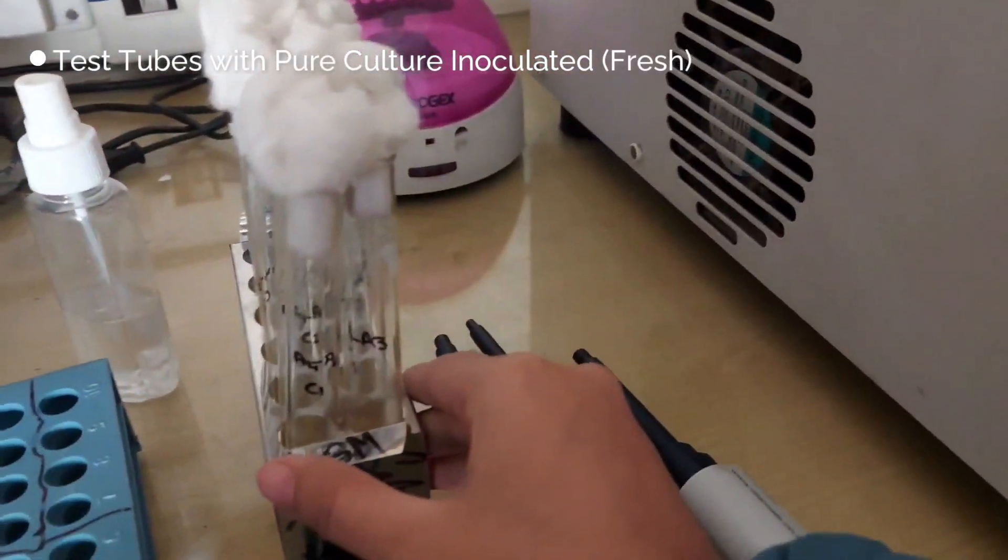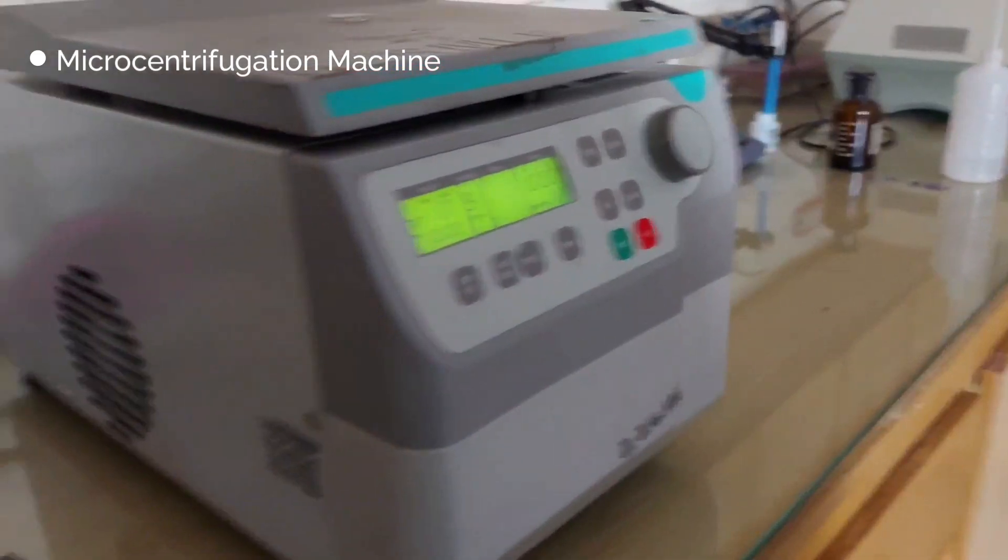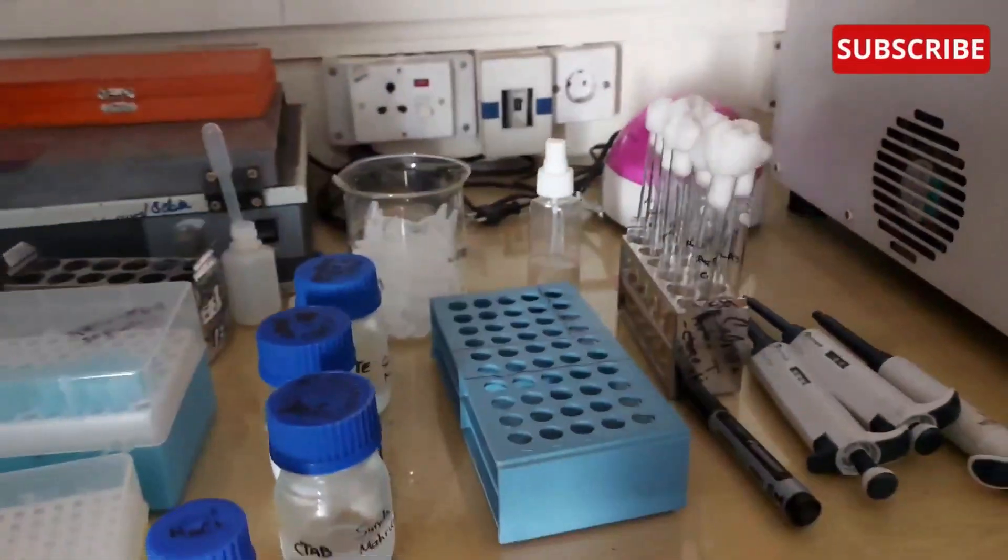Here I have the test tubes which contain the nutrient broth and my inoculum, centrifugation machine and autoclave eppendorfs. Let's start.